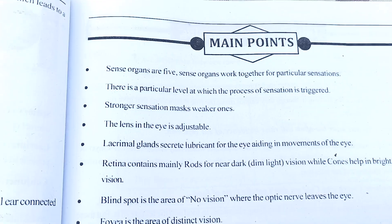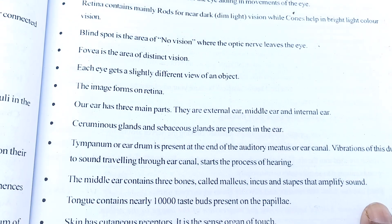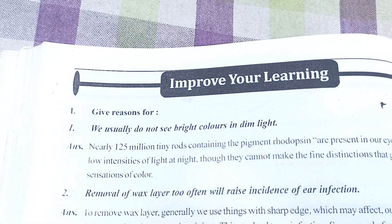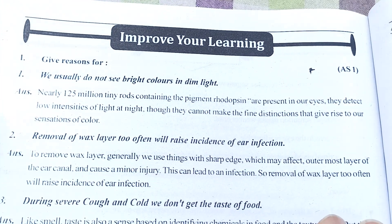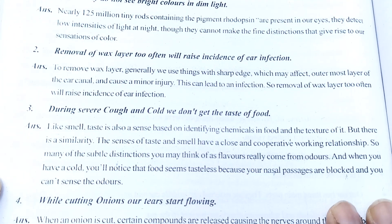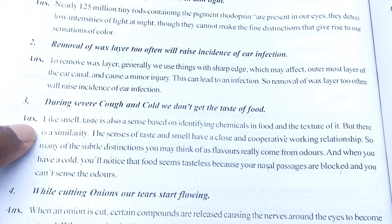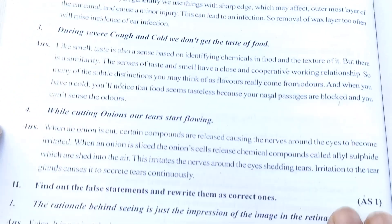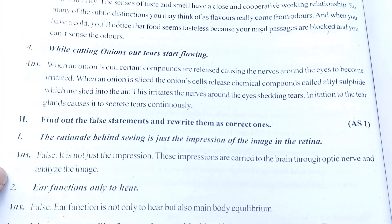After the keywords, we come to the main points which are already given in your textbook, so it may not be very helpful here separately. After that, the question-answer section starts. This is the first question and its answer. This is the second question-answer, and the third. After that, this is the fourth and fifth answers — fourth one, second one, first one answer.